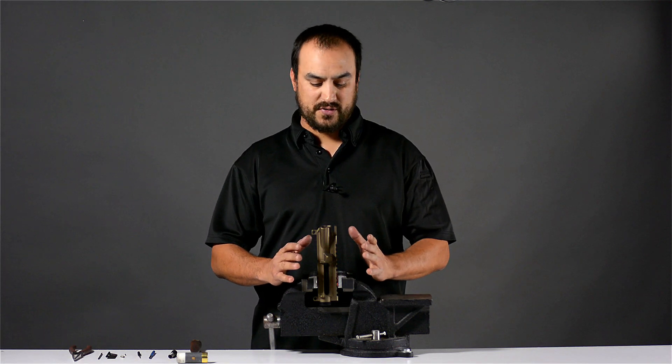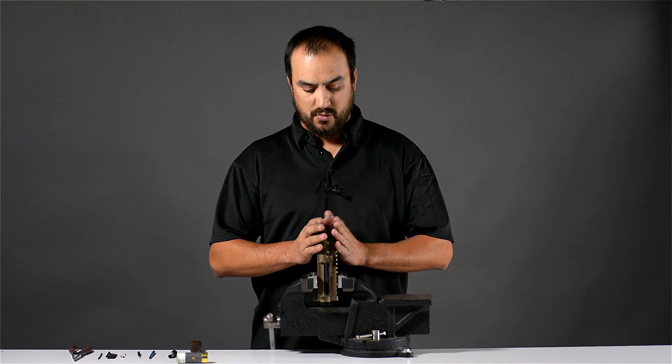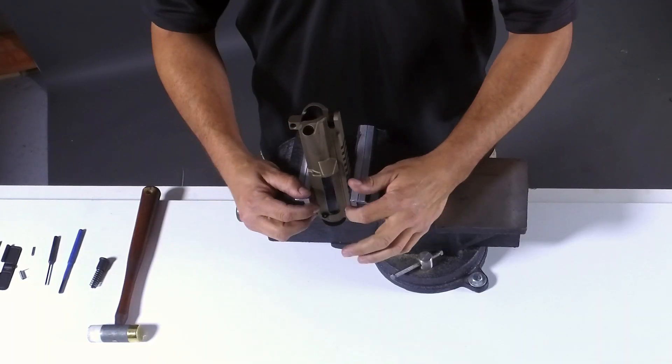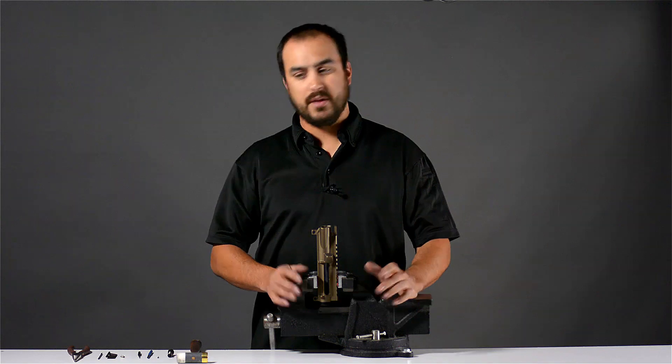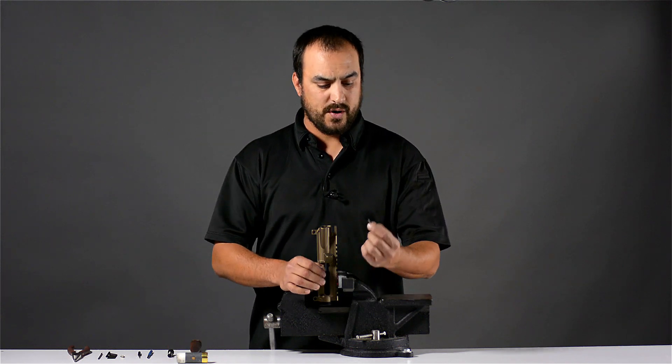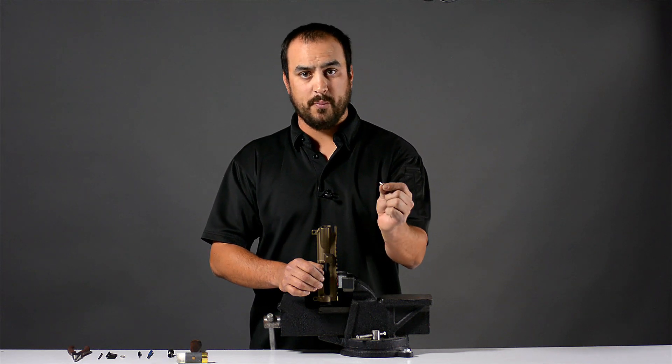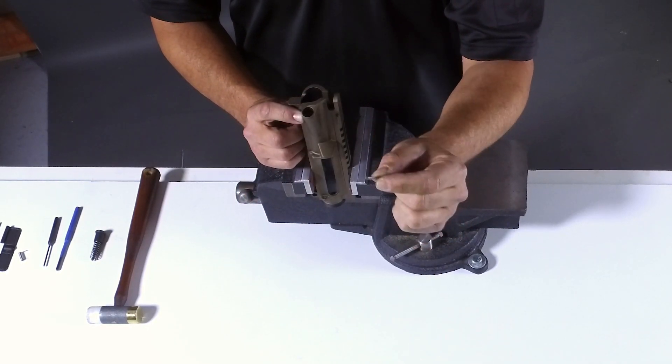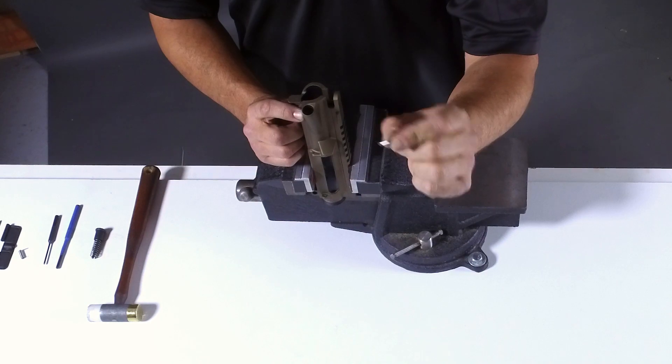For the first step, we are going to secure our upper receiver into the vise using some padded jaws. Now that we have our upper receiver secured, we're going to install the roll pin that keeps the forward assist in place. This roll pin should have been given to you in your upper receiver kit.